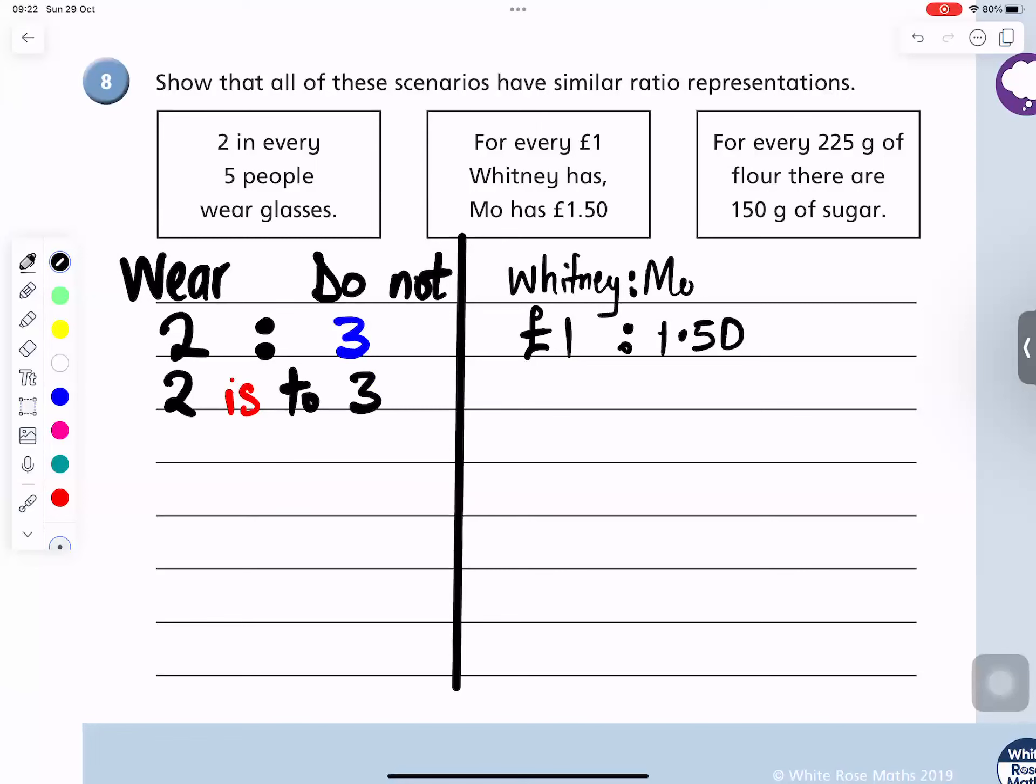Now we want to change it to look like two is to three. So how many fifty pence are there in one pound? Fifty pence plus fifty pence is one pound. So how many fifty pence?